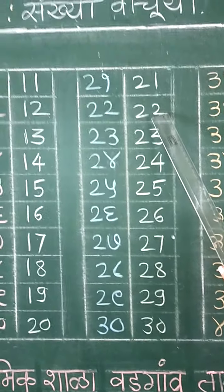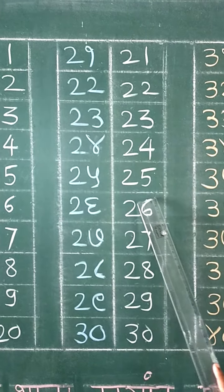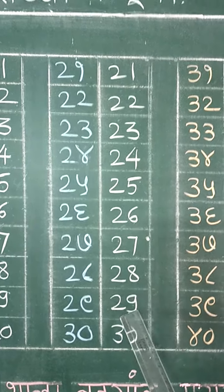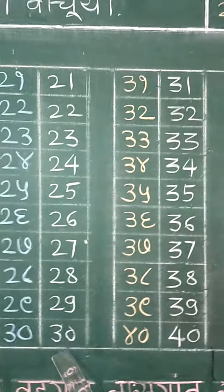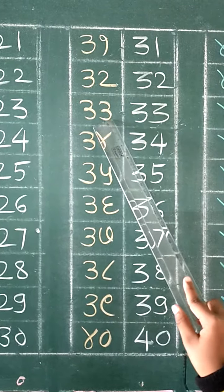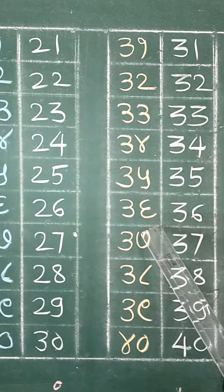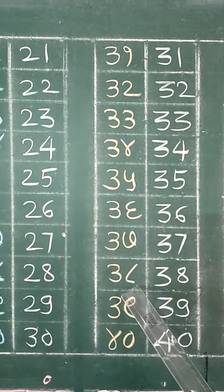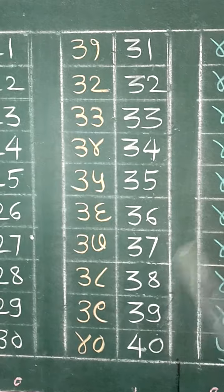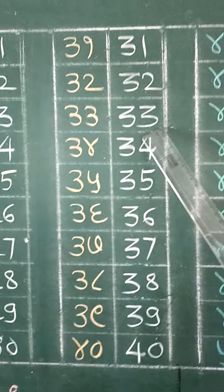21, 22, 23, 24, 25, 26, 27, 28, 29, 30, 31, 32, 33, 37, 35, 36, 37, 38, 41, 42.